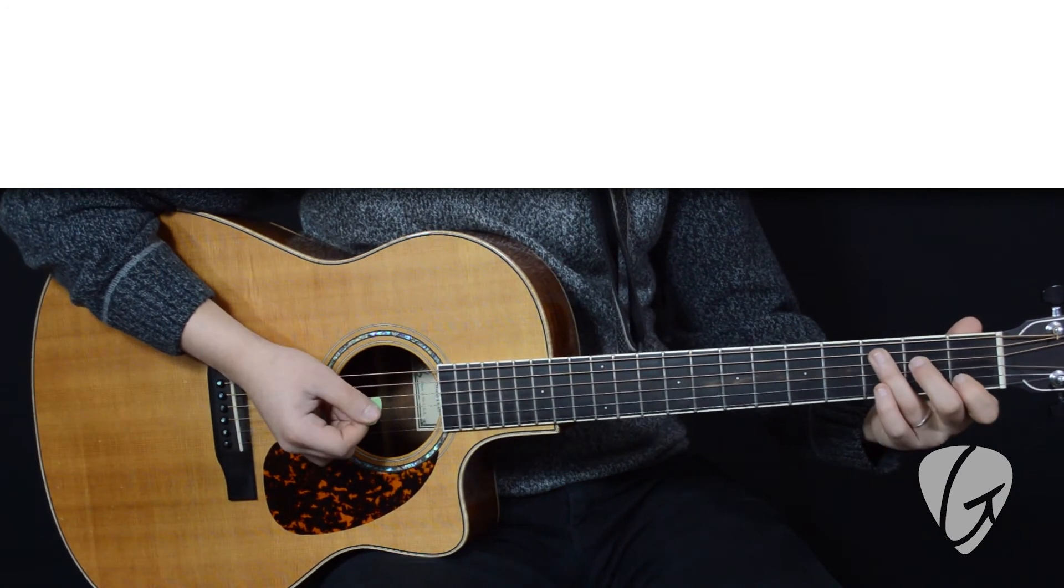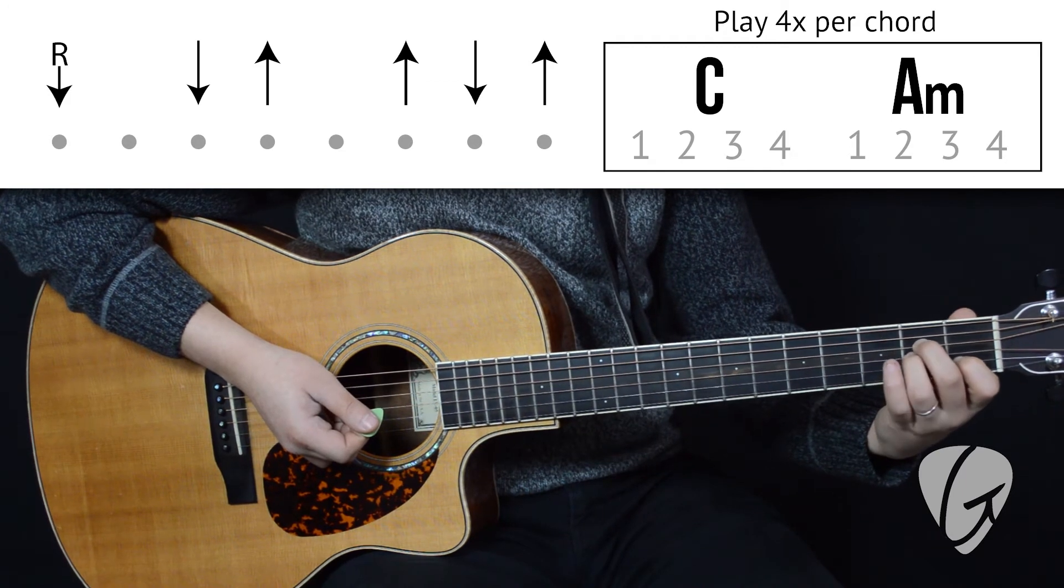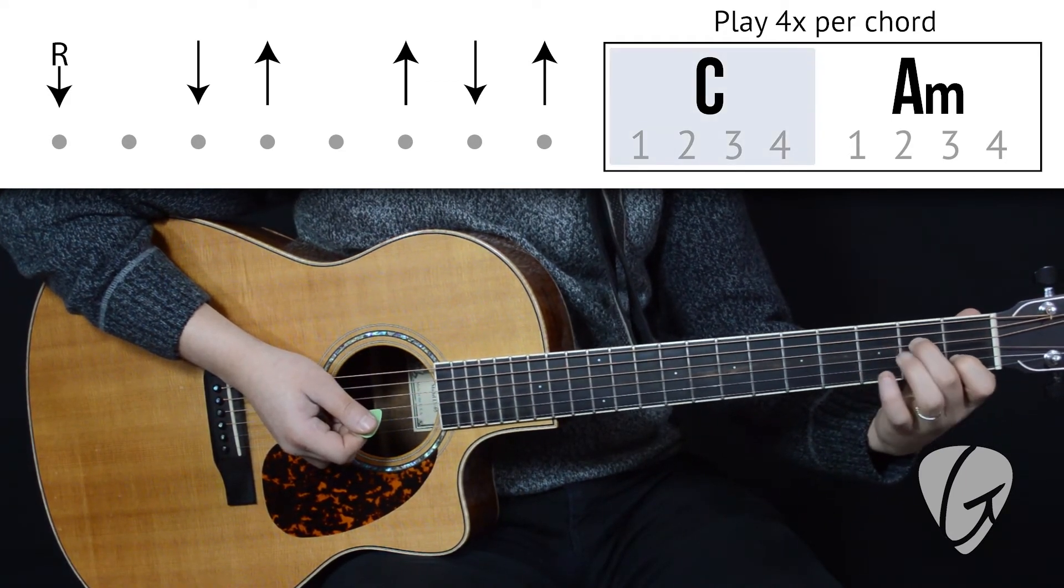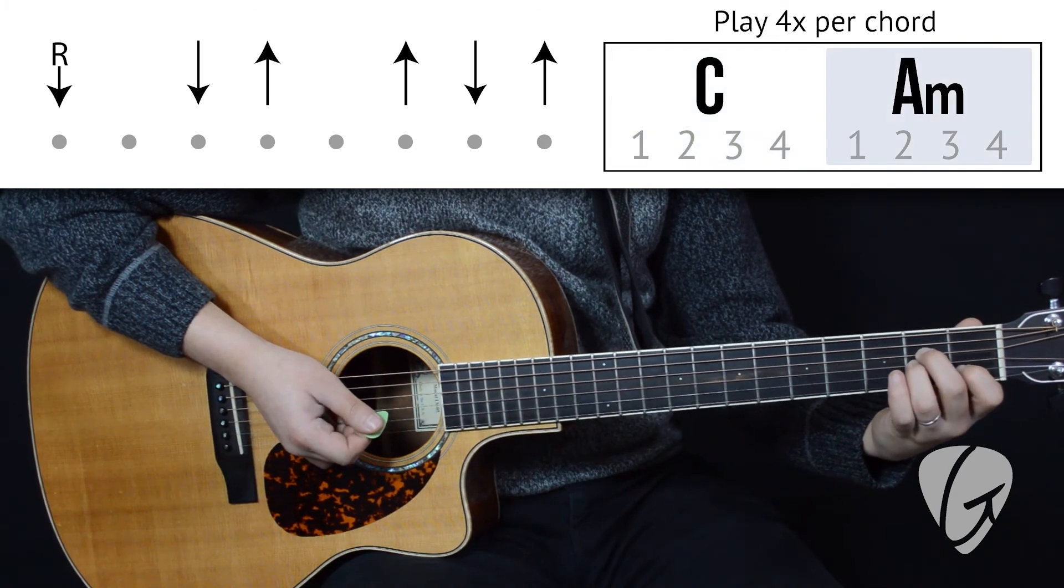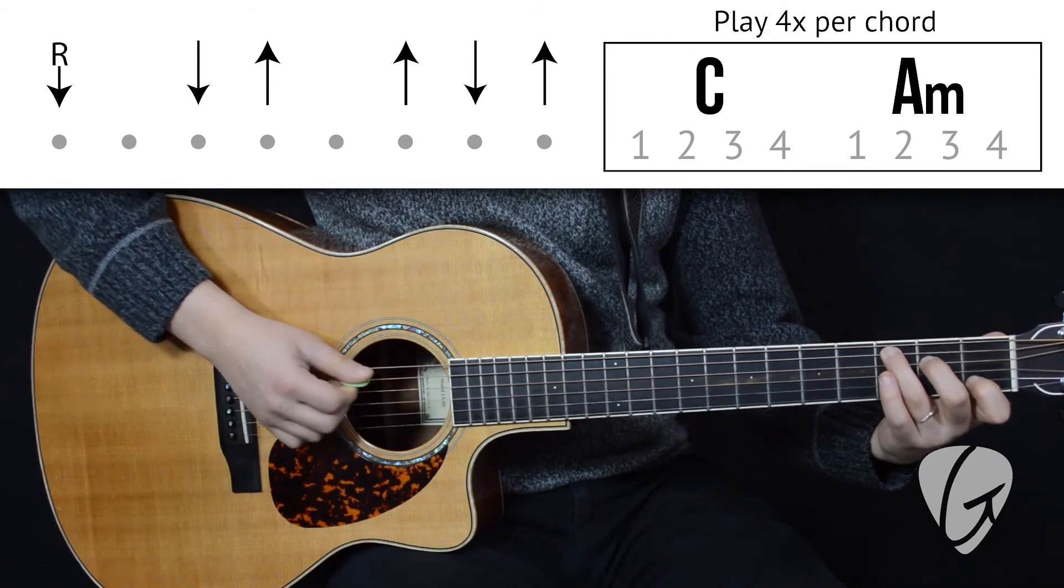And just like before, we're going to add a chord switch, this time to A minor. So we'll play the strumming pattern four times over C and four times over A minor. Let's give it a shot. One, two, three, four.